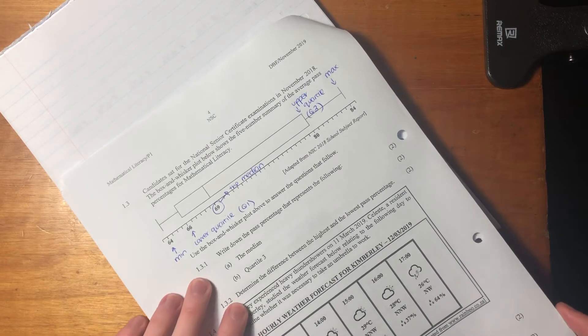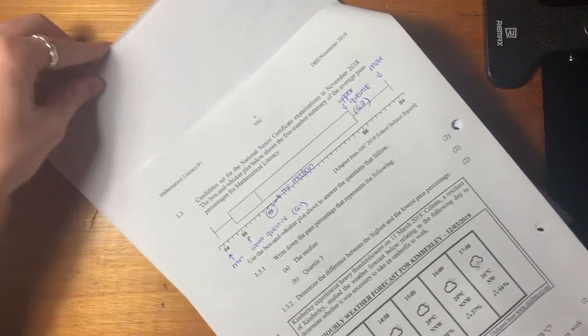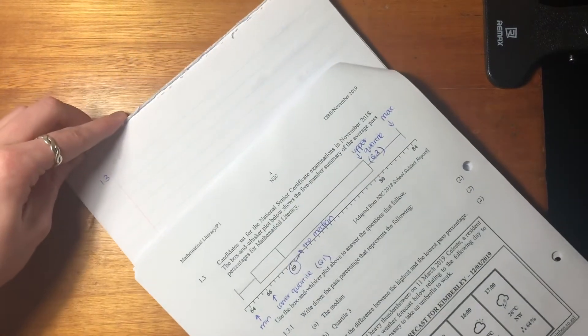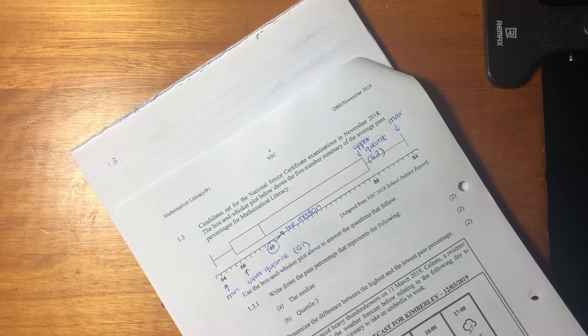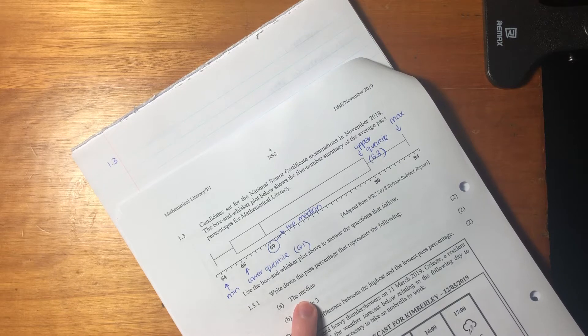So it says, use the box and whisker above to answer the questions that follow. So let's first of all write 1.3. Let me see that you can see that. So it says, write down the pass percentage that represents the following. So let's just see here.